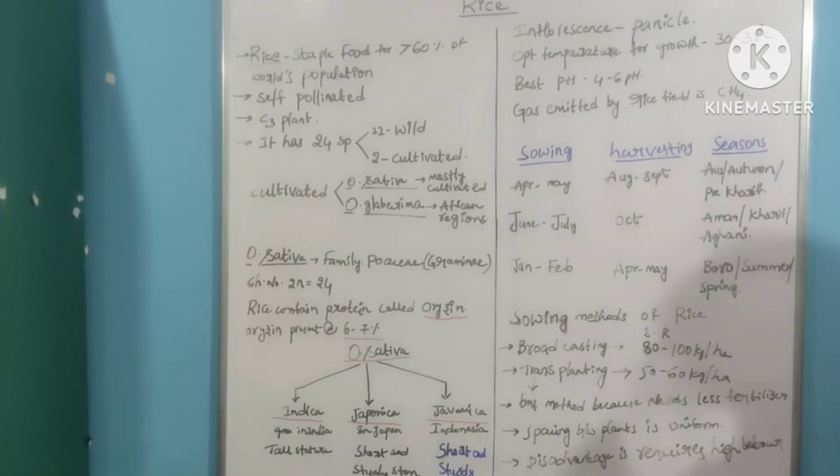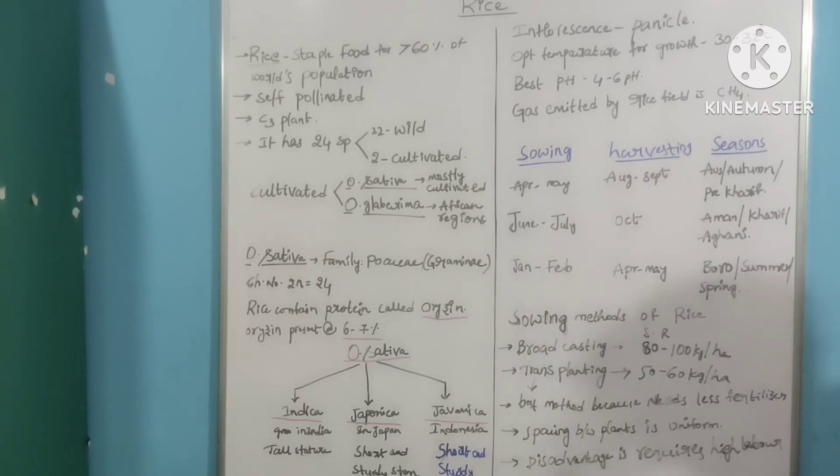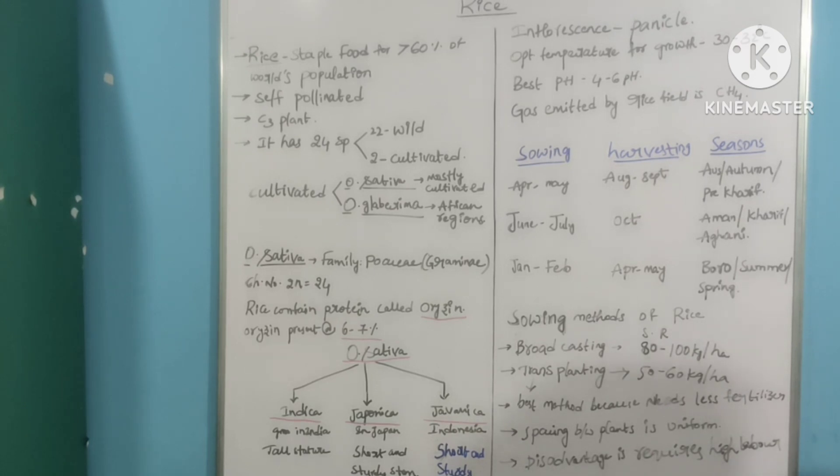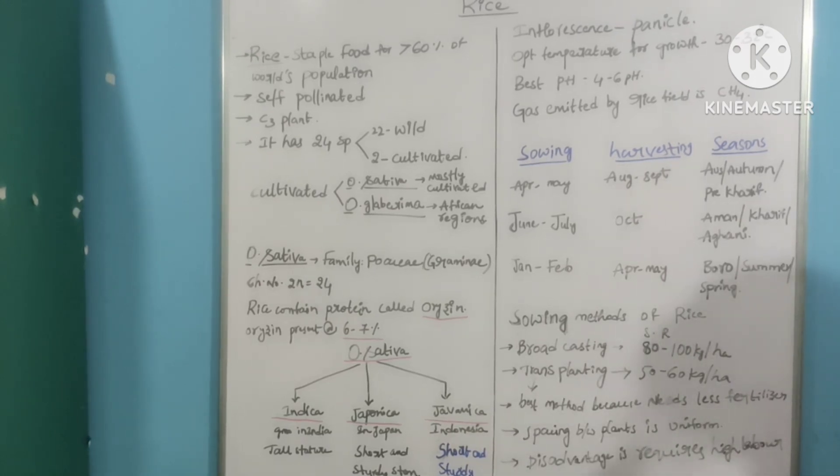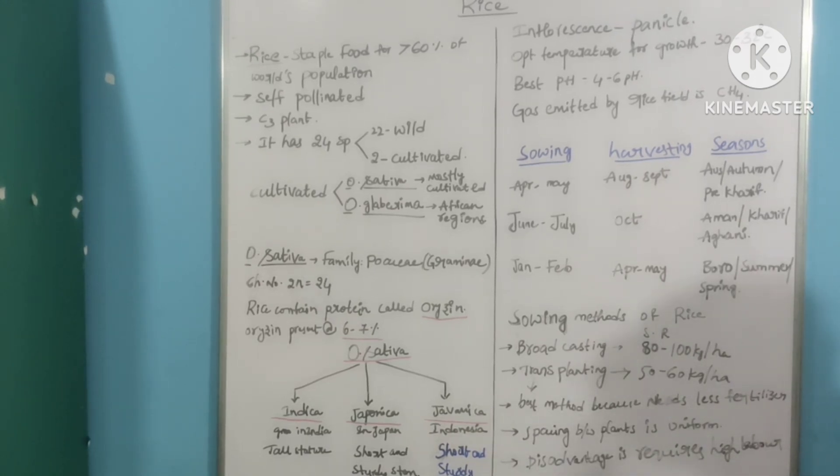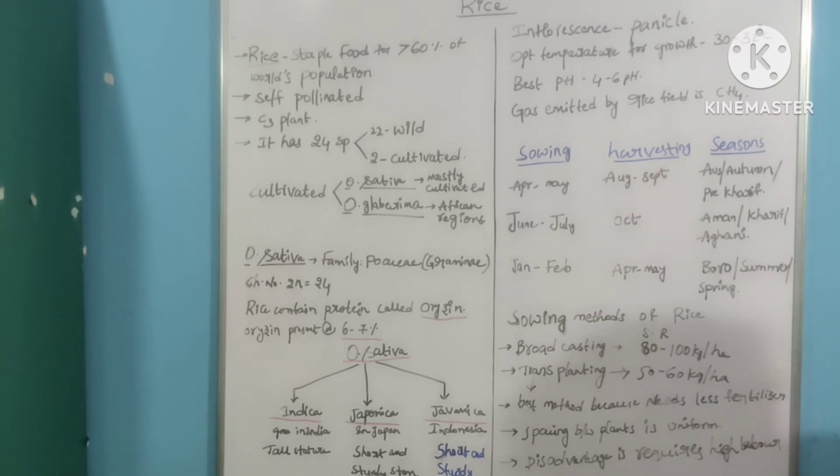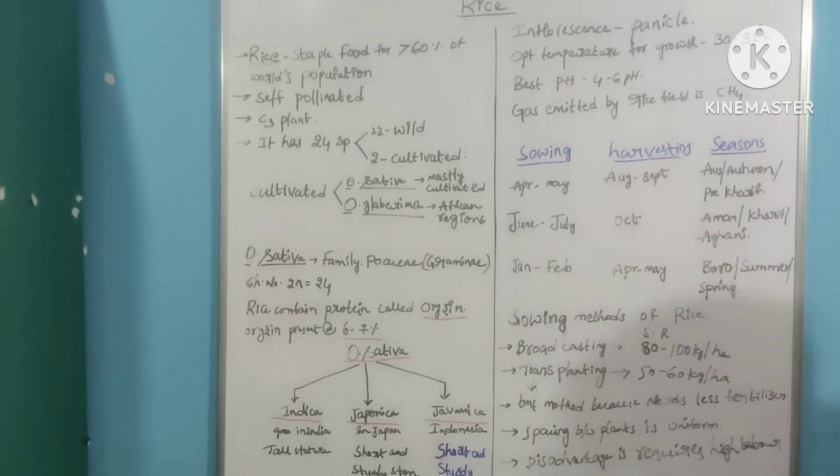Rice is a staple food for more than 60% of world's population and it is a self-pollinated C3 plant. It has 24 species. Among them, 22 are wild and 2 are cultivated species. Those 2 cultivated species are Oryza sativa and Oryza glabrima.